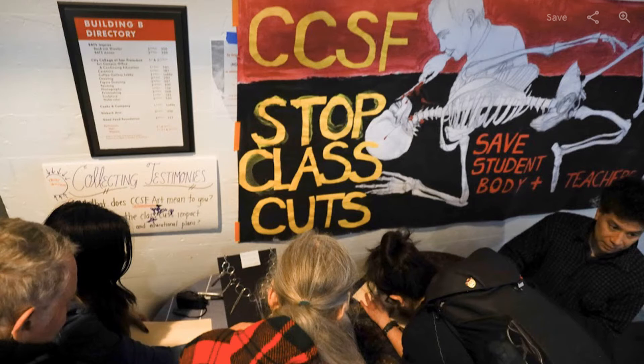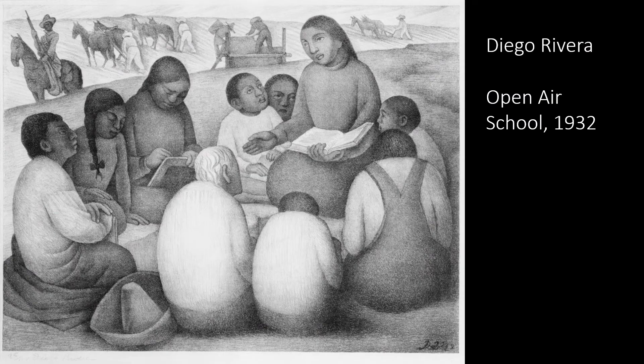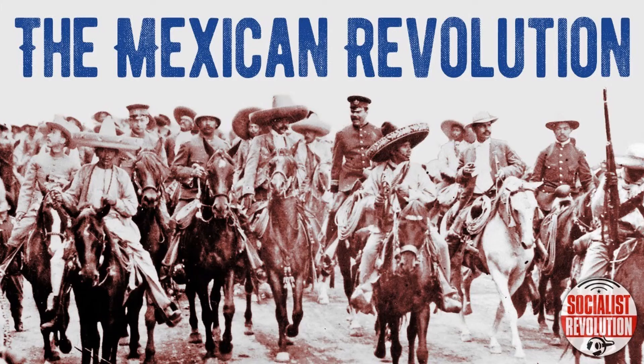In 2021, the teacher and the students could be representing City College with students of all different ages, and the farmers could be representing essential workers who can't afford to go to school.